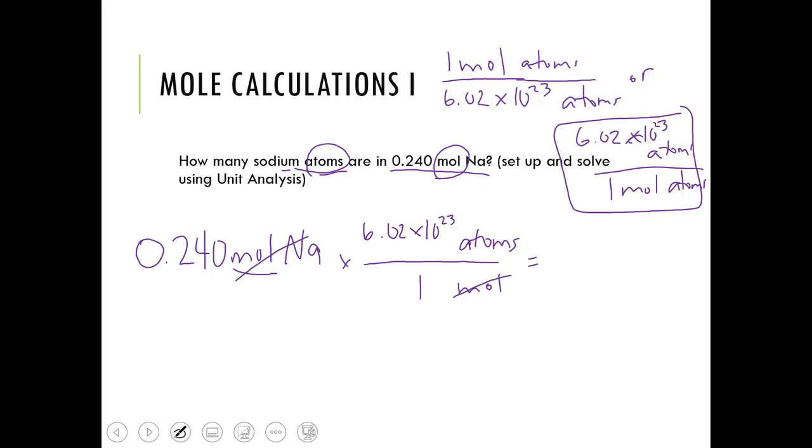Now on your calculator, we need to type in 0.240 times 6.02 times 10 to the 23rd. So please make sure that you are using your calculator correctly. If you type it in, you should get 1.4448 times 10 to the 23rd. If you did not get this, please go back and try typing it in differently. If you don't know how to use your calculator, then this is going to be a huge frustration for calculations to come for the rest of the semester. So please, please, please let me know if you need help with how to put scientific notation into your calculator.